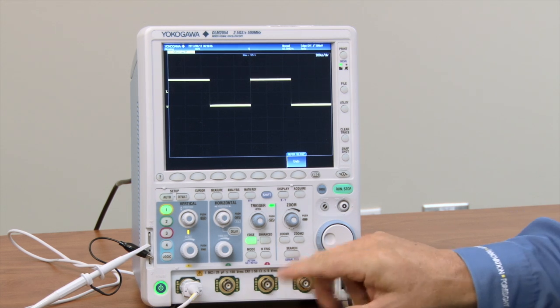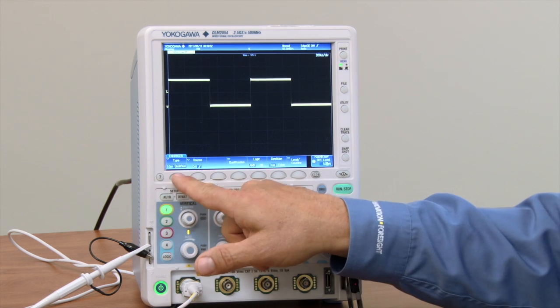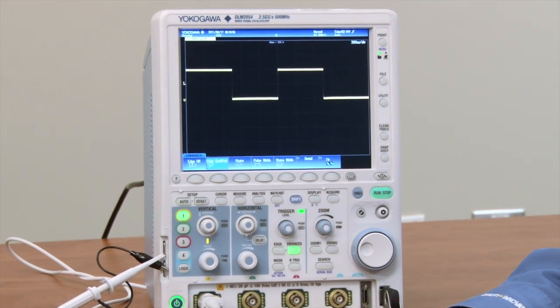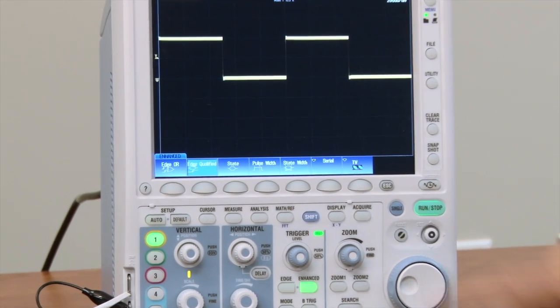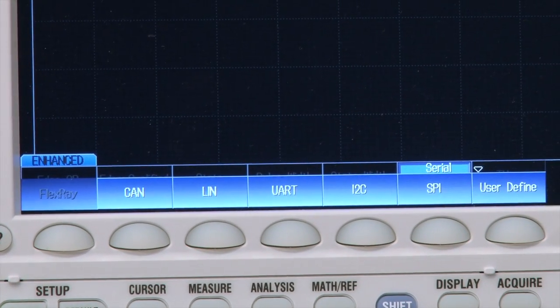We also have a number of triggers, both simple and enhanced, which would allow you to collect a lot of different trigger parameters based on your scenario, including serial bus triggers which are CAN, LIN, UART, I squared C, SPI, and user defined.